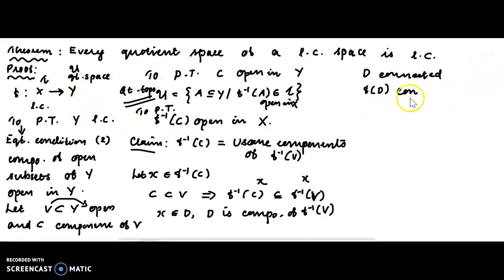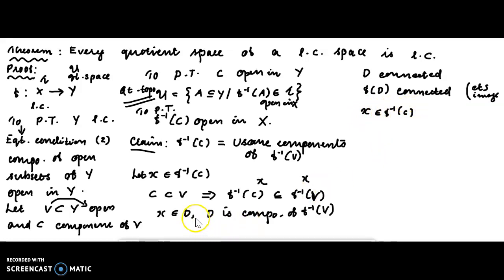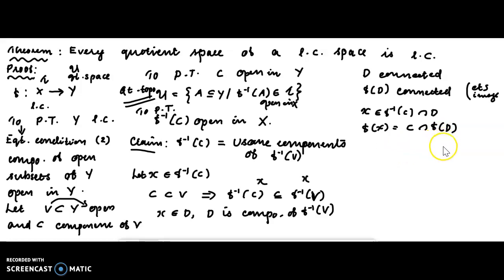F applied to D is connected, since D is connected and F is continuous. The image f(D) is a connected subset. C is a component of V, so f(D) intersects C. Since C is a component and f(D) is connected, f(D) is a subset of C.